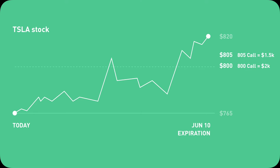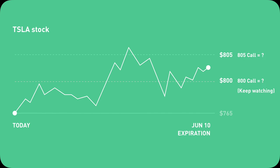If Tesla's stock price ends at, say, $820 — even above your higher strike price of $805 — you won't get your $500 collateral back; in fact, you will lose all $500 of collateral. But since you gained $170 in the beginning, your net loss is actually $330. If Tesla's stock price ends up somewhere between $800 and $805, you can net either positive or negative depending on exactly where. That concludes the three-minute version.